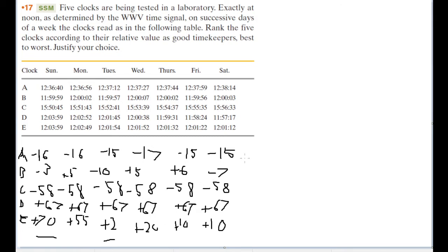The question actually asks us to rank their relative value as good timekeepers from best to worst. Our best is definitely going to be either C or D, and I'm going to say C because the number of seconds by which it's off is closer to the intended one than D is. So I'm going to say C and then D, and those two are perfectly off at a consistent interval.